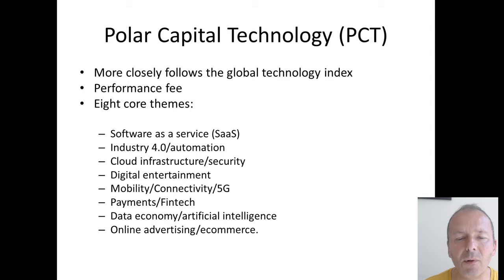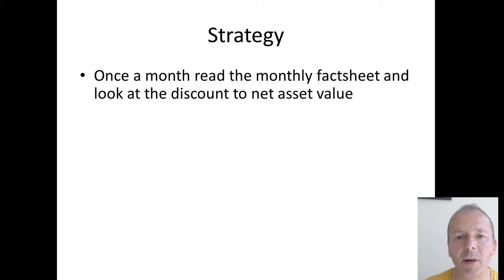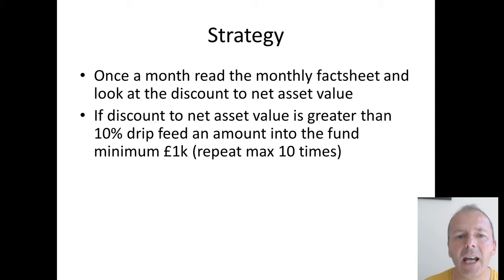Now let's look at a possible strategy for investing in those investment trusts. Once a month, read the fact sheet — if you can't be bothered to do that, don't invest. Look at the discount to net asset value; we're not checking daily, just once a month. If the discount to net asset value is greater than 10%, drip feed an amount into that fund — a minimum of £1,000 to make the brokerage commission worthwhile. Repeat this for a maximum of 10 times so you can average down, but not infinitely.